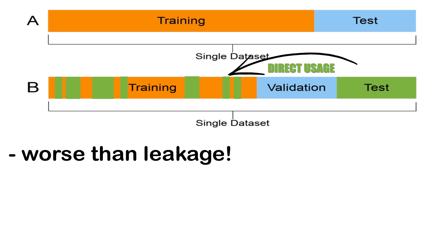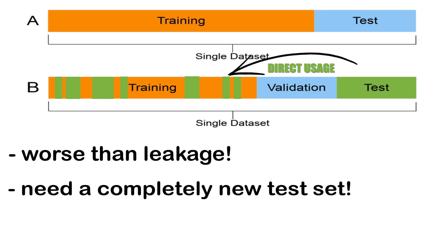It is not as easy to fix because you will now need a completely new test set, as your original test set is no longer valid. Common examples include tuning hyperparameters using test data or performing feature selection on the full dataset, including the test set.